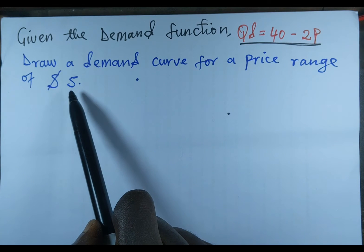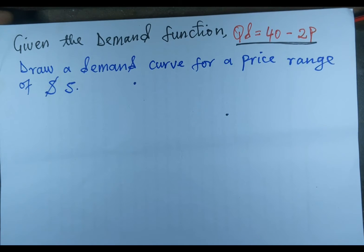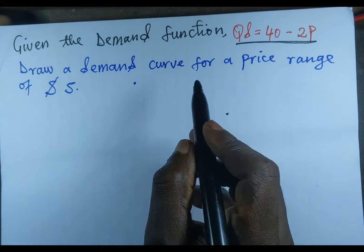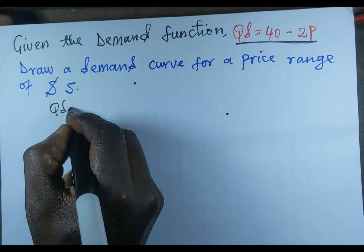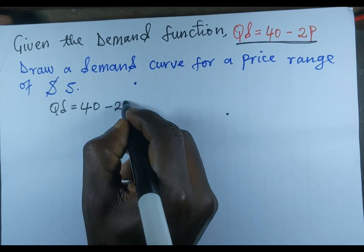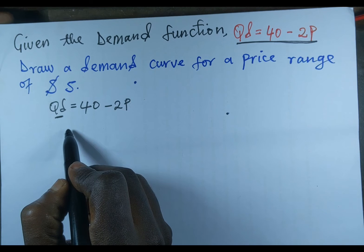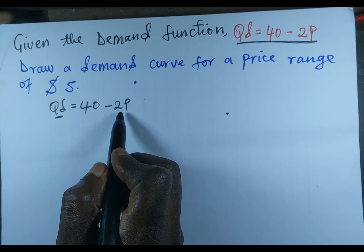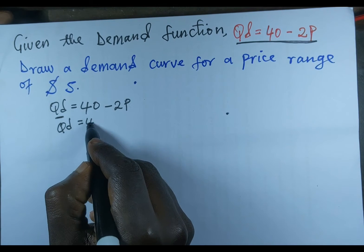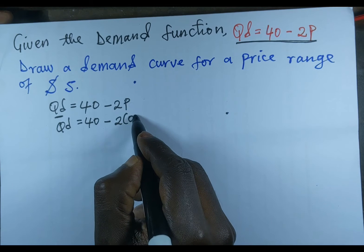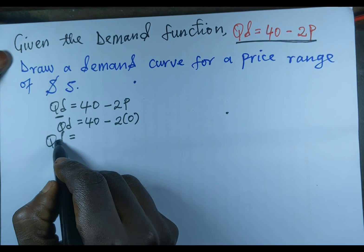For a price range of 5 US dollars. The first thing we need to do is look for the price intercept and the quantity intercept. Starting with the demand function Qd = 40 minus 2P, to find the quantity intercept we look for the point where price is zero. Substituting P = 0, we get Qd = 40 minus 2 times 0, so Qd equals 40.